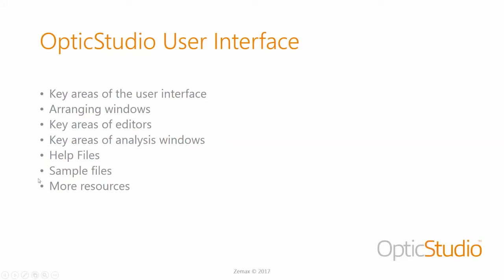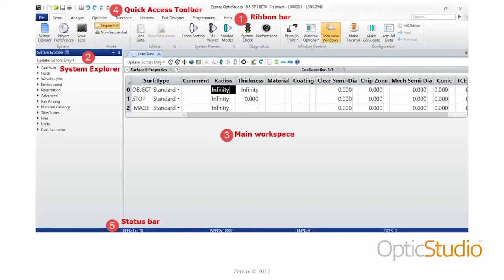This is a screenshot of the OpticStudio user interface. Number one is the ribbon bar, which should look pretty familiar — it's modeled similarly to other Windows applications. You have a file tab where you'd go to open files, save files, or convert file formats. The setup tab is for setting up the user interface or other project-specific things. Then we have an Analyze tab, Optimize tab, and Tolerance tab — three of the major capabilities of the software, which come in all editions from standard to premium.